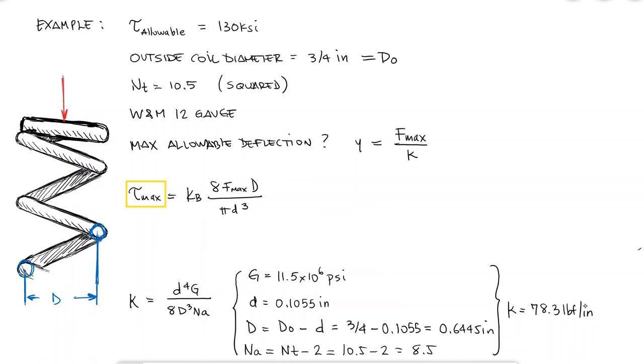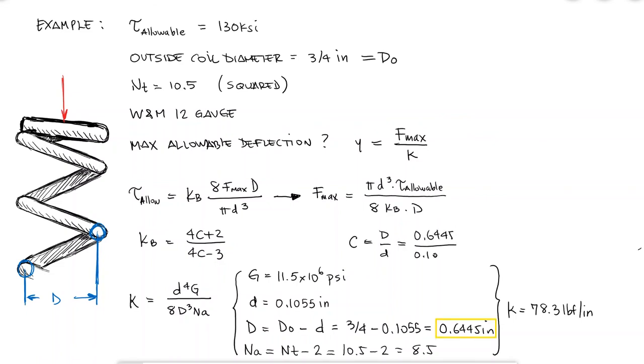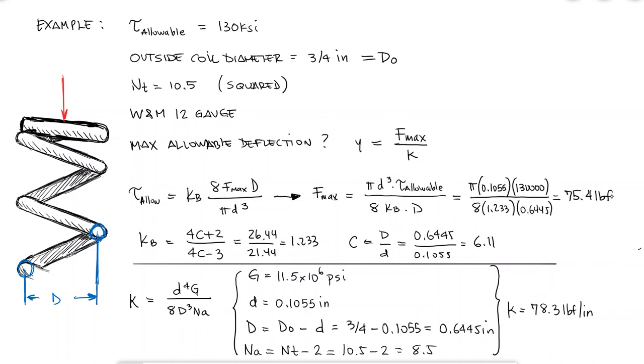Now, I know that the maximum shearing stress before the spring fails is when the shearing stress due to a compressive force reaches the value of the maximum allowable shearing stress. From this expression, I can solve for the maximum force, the force that causes that shearing stress. The only value I'm missing from this expression is the curvature correction factor kb, which depends on the spring index c. With the known values for the mean coil diameter and the wire diameter, I can find c and therefore kb, which allows me to calculate that maximum force. The maximum allowable deflection will therefore be the maximum allowable force, so that the spring doesn't fail, over the spring constant k.